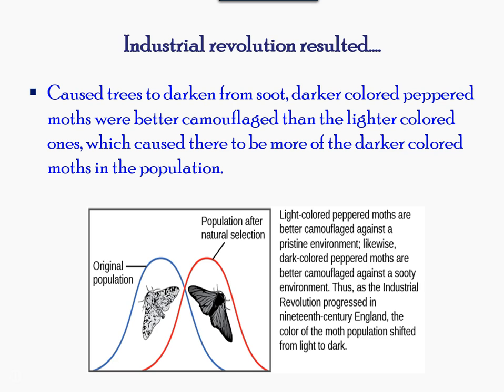Another example to help us understand evolution is seen during the industrial revolution, where soot from coal would cover the bark of trees. Dark-colored moths were camouflaged and survived being picked off by predators. Light-colored moths slowly started to decrease in the population.